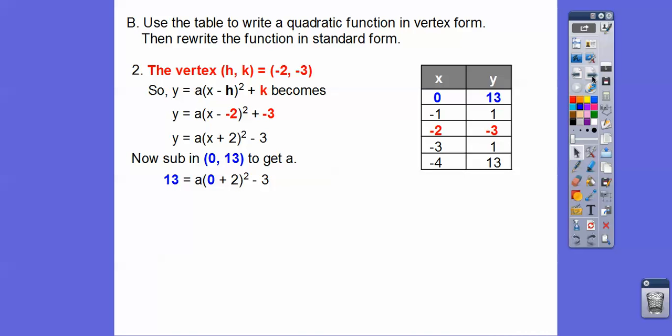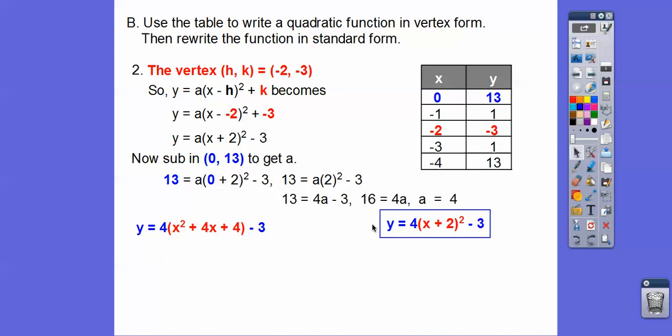So 0 plus 2 is 2, so 2 squared is 4, so we have 13 equals 4a minus 3, add 3 to both sides, divide by 4, we get a equals 4. So there it is in, whoops, I did two things at once. There it is in vertex form, and then I'm going to convert it to standard form over here. So now we'll distribute this 4 through, and then combine like terms, and we get that. So here it is in vertex form, here it is in standard form right there.